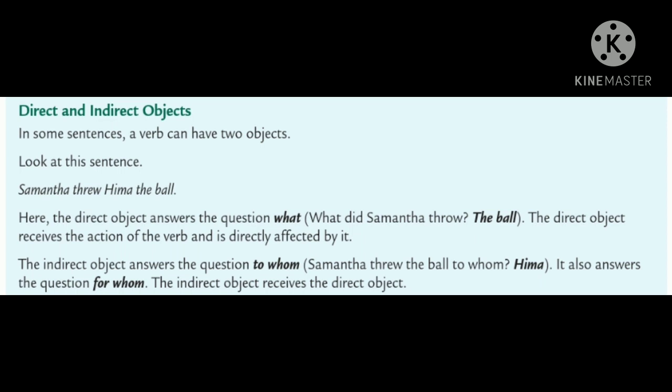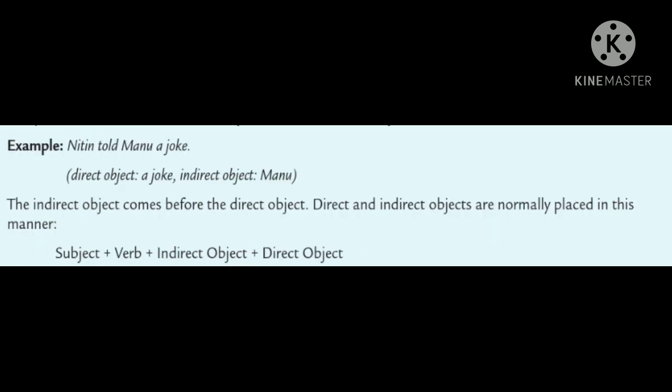The direct object receives the action of the verb and is directly affected by it. The indirect object answers the question to whom. Samantha threw the ball to whom? Hema. It also answers the question for whom. The indirect object receives the direct object.